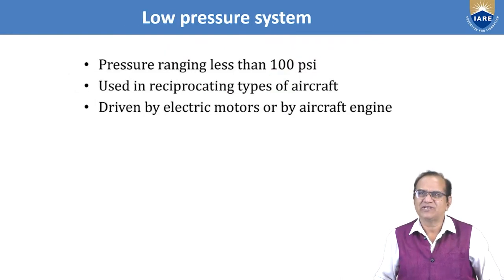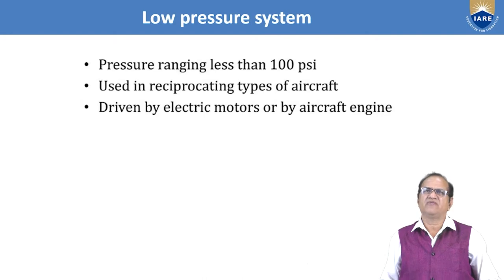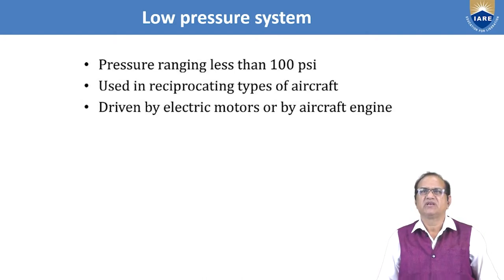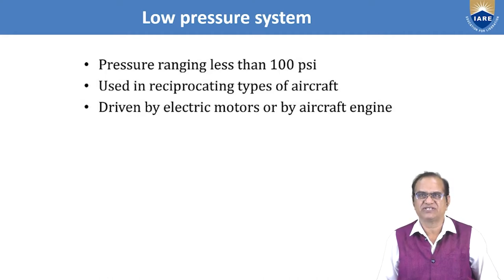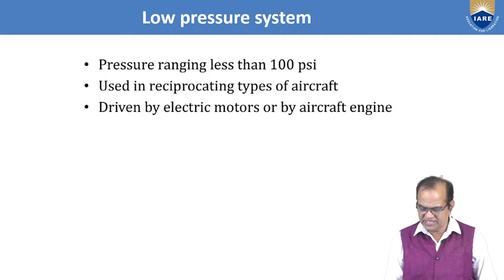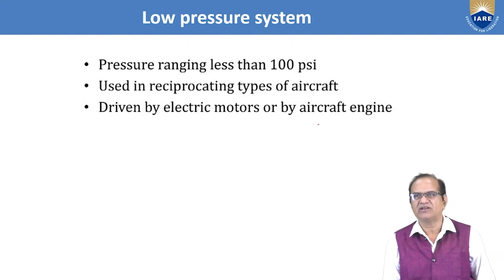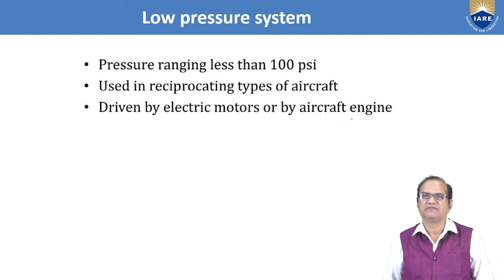The low pressure system has pressure ranging less than 100 psi, used in reciprocating-type aircraft driven by electric motors or aircraft engines. This system is also operated by electrical motors or sometimes by an engine-driven pump.